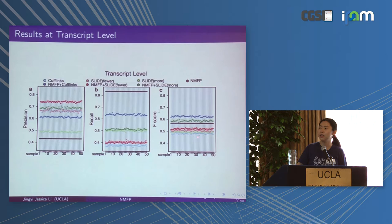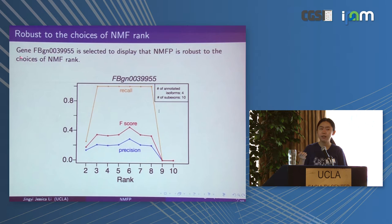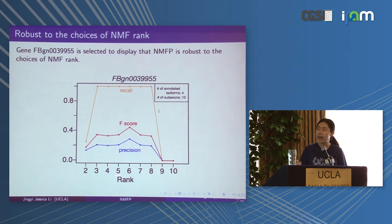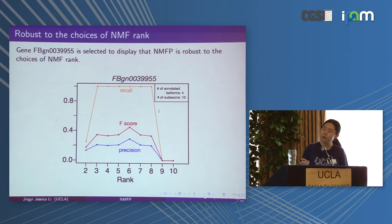We analyzed the robustness of our method to the choice of NMF rank by varying the rank and checking precision, recall, and F-score. For a gene with four annotated isoforms and ten subexons, the results are stable over a relatively wide range of rank values, not just at rank four. This is because our aggregation over multiple NMF runs makes the method insensitive to rank choice. We advise users to simply set the rank to the number of annotated isoforms.